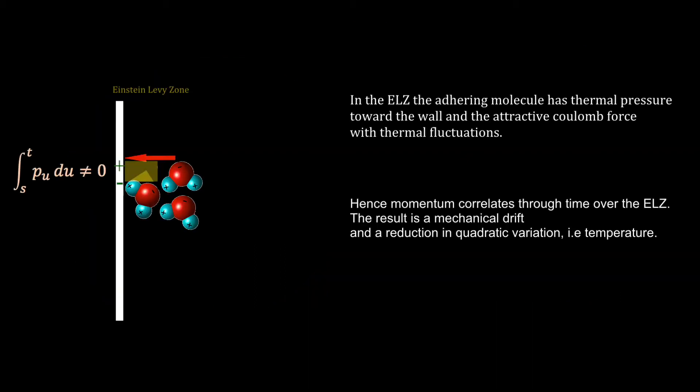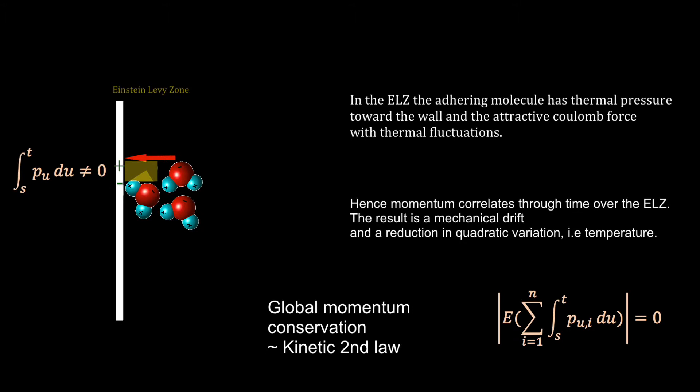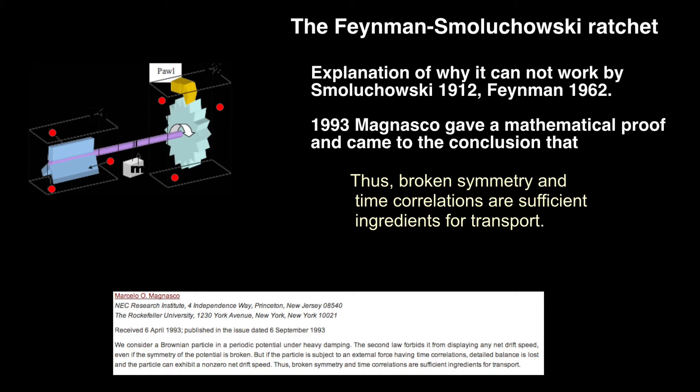Maybe. Consider the passage of a molecule to a docking point in the glass. As it transfers over the width of the last water molecule, it undergoes asymmetric thermal fluctuation. Note the difference to the Brownian ratchet, which very famously does not work, as mathematically demonstrated by Magnasco. In this case, we have broken symmetry and time correlations.